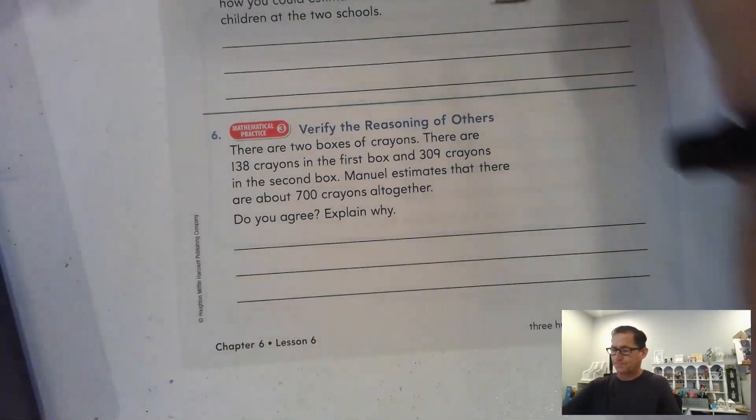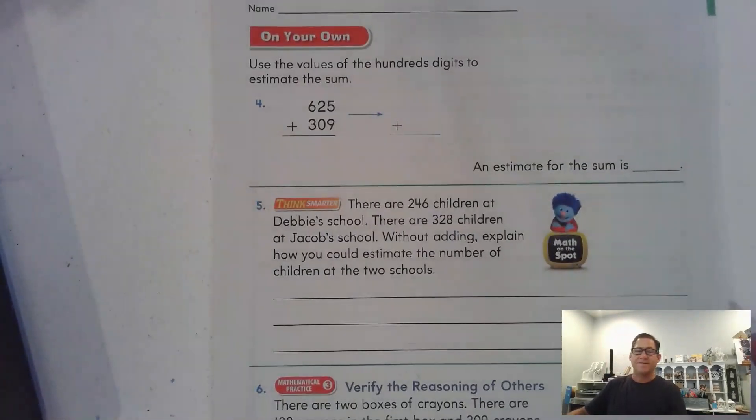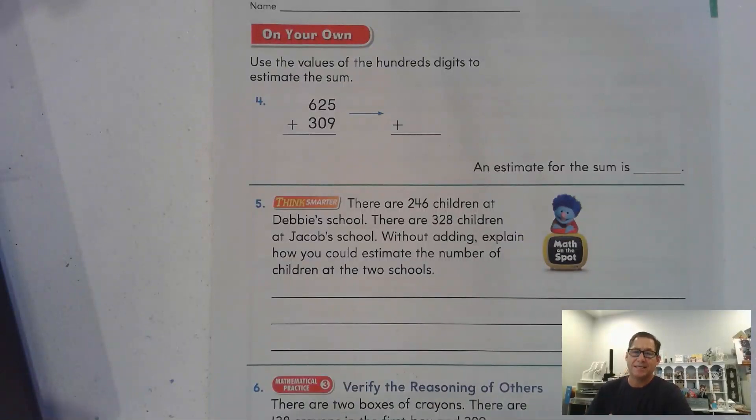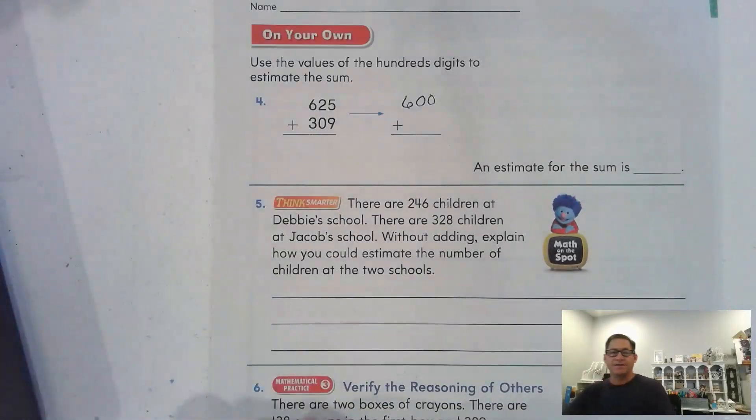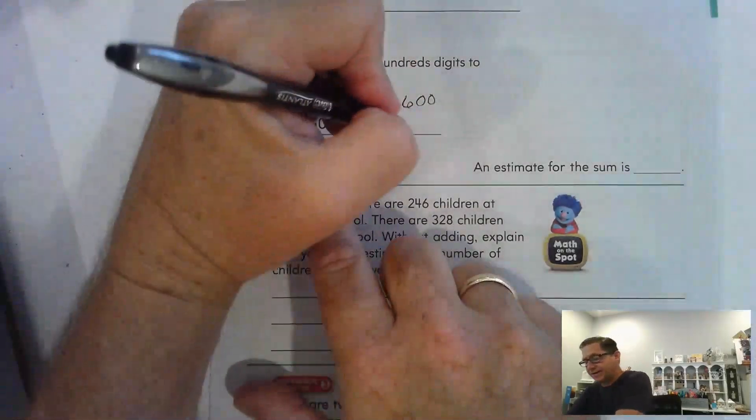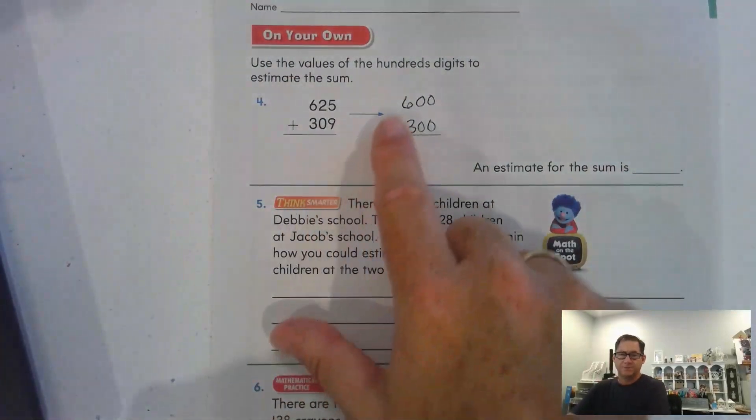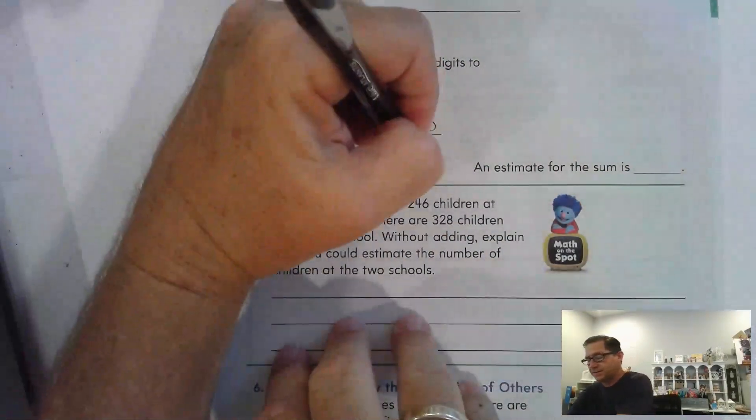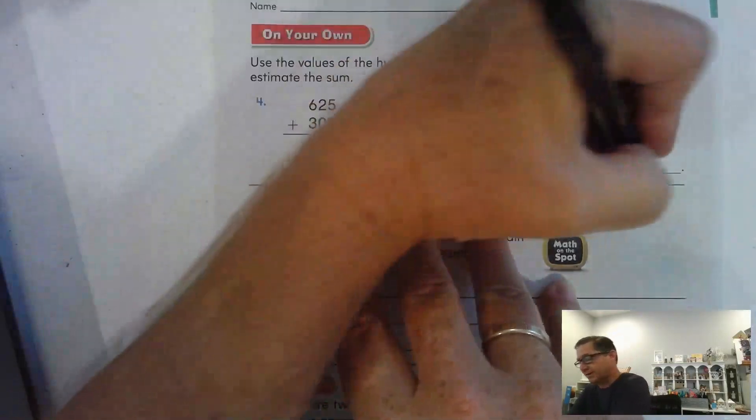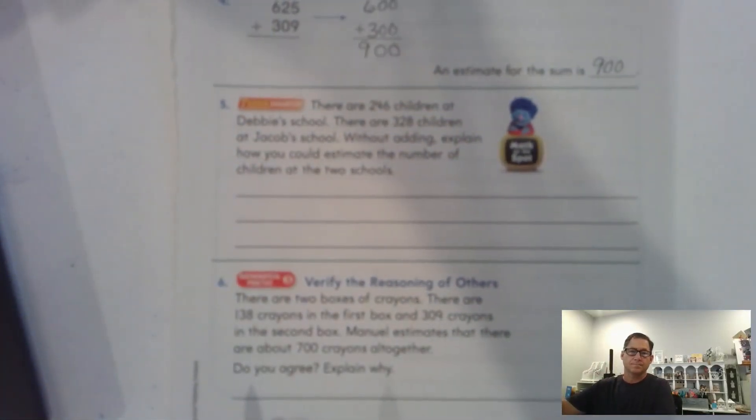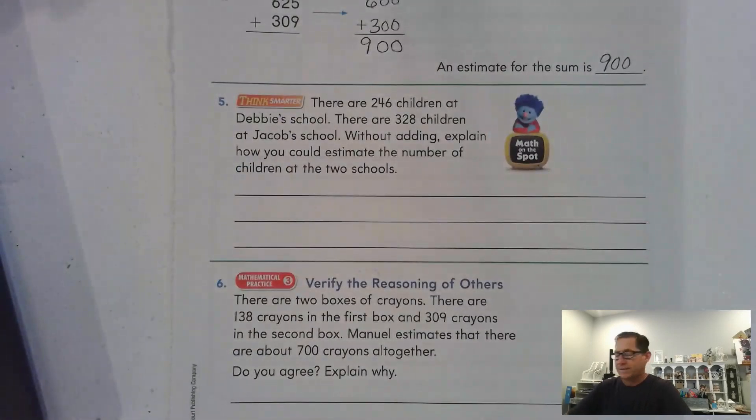Alright. Let's go to page 303. Use the values of the hundreds digits to estimate the sum. 625. 600. 309. That's 300. 900. Just add the hundreds. 6 and 3 is a math fact of 9. So, 6 plus 3 is 9. So, 900.